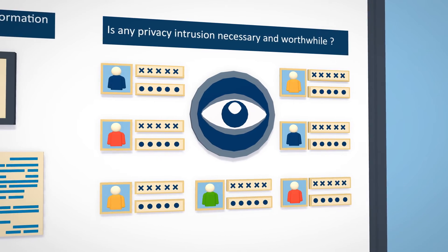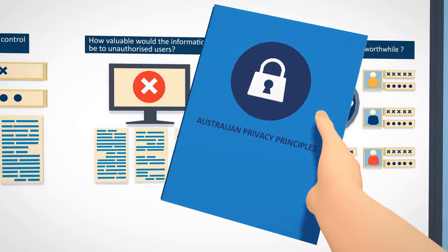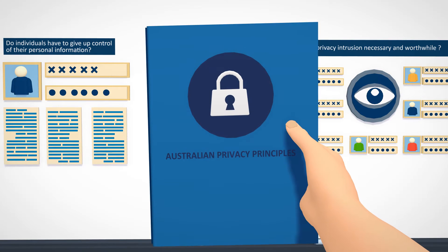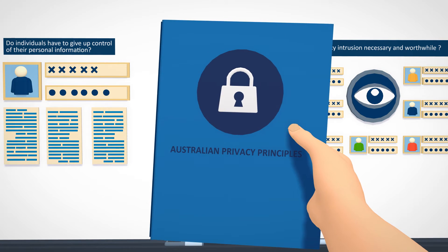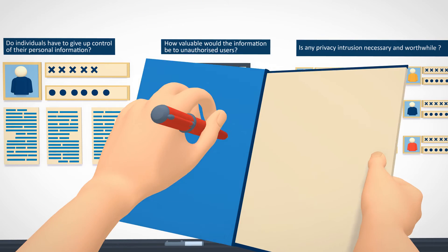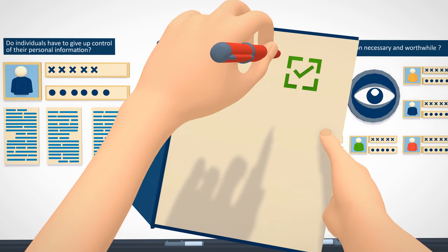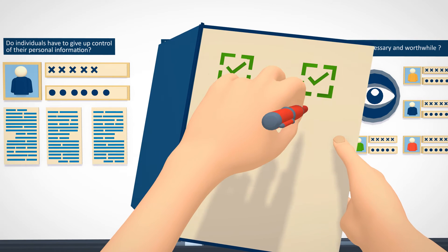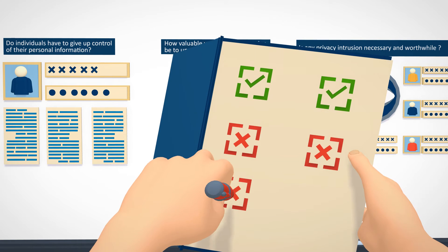Secondly, check compliance with the Australian Privacy Principles and any other privacy-related legislation or information handling obligations. Document how your project complies with each APP, or why you are not required to comply. You should also list any risks that you identify.